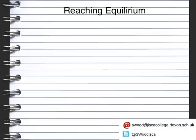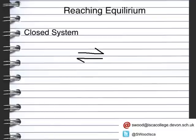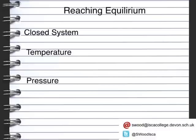In order to reach an equilibrium, you must have it in a situation where the chemicals cannot escape. This is known as a closed system. We also need to remember that the rate of the forward reaction is the same as the backwards reaction. The position of the equilibrium can be changed to suit what you are looking for, and there are several factors you can use to change it, including temperature, pressure, and the concentration of the chemicals.